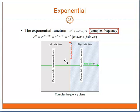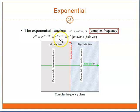Next, we have the exponential function. The exponential function, e^(ST), is when S is equal to sigma plus j-omega — this is a complex frequency. So e^(ST) equals e^((sigma + j*omega)*T), which gives you e^(sigma*T) times e^(j*omega*T), and this gives you e^(sigma*T) times (cos(omega*T) + j*sin(omega*T)).